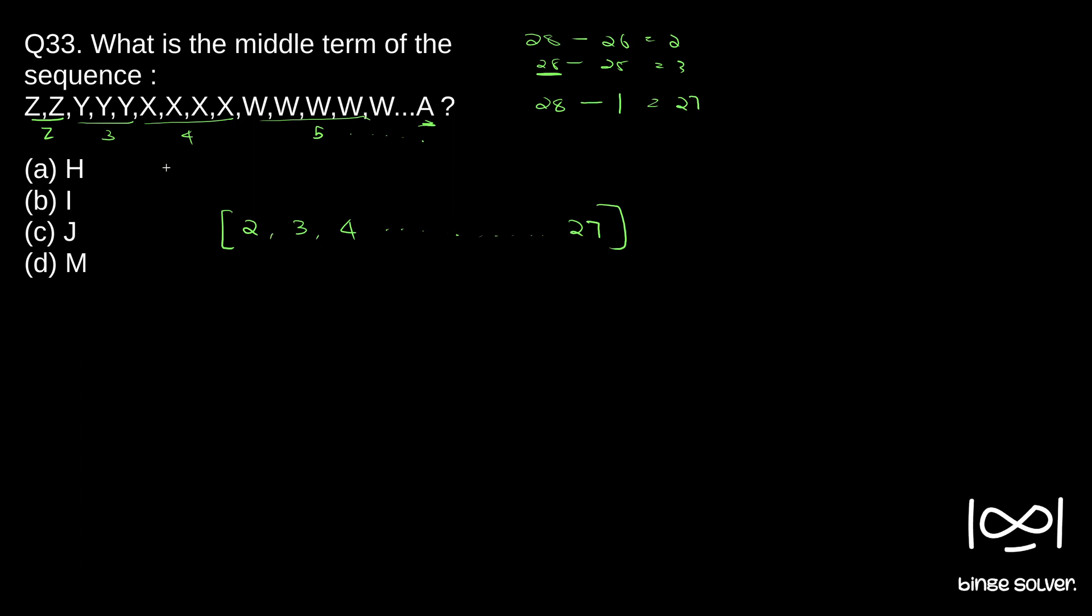So now as you can see, Z is repeating two times, Y is repeating three times, W is repeating four times and A is repeating 27 times. Now what is the middle term? To find the middle term, what we need to do? Find all the number of alphabets, which is nothing but 2 plus 3 plus 4 up to 27. So we need to add all these up and divide by 2.